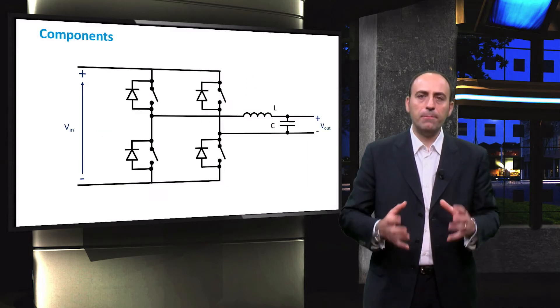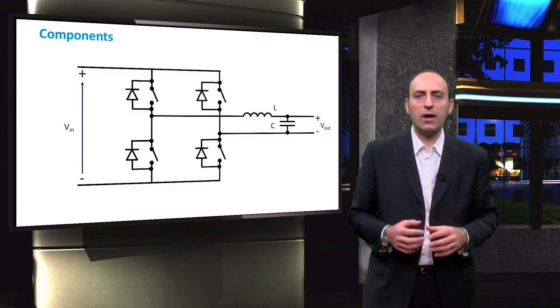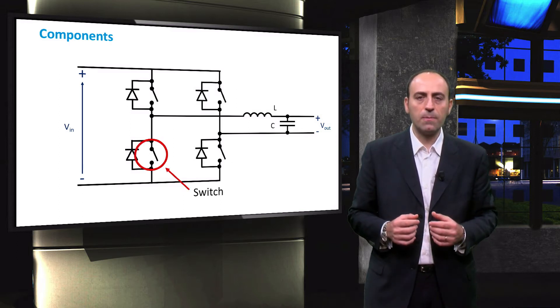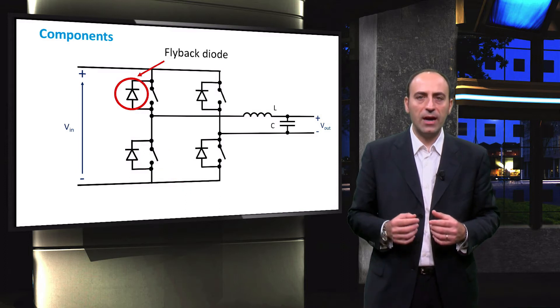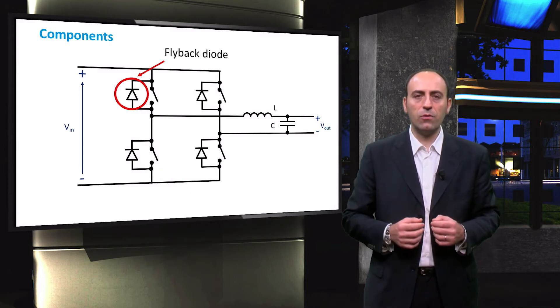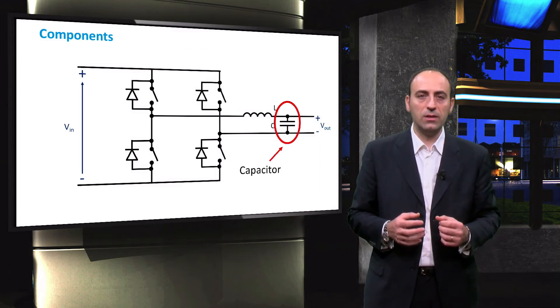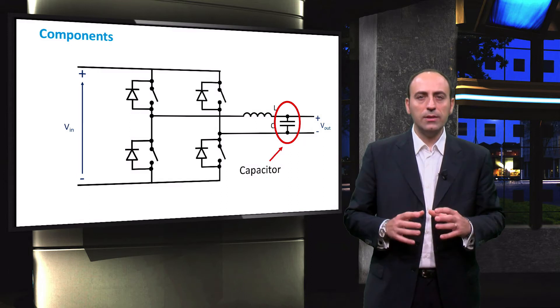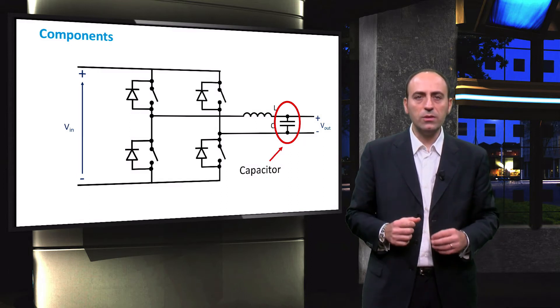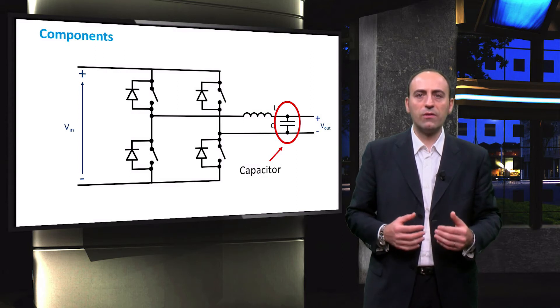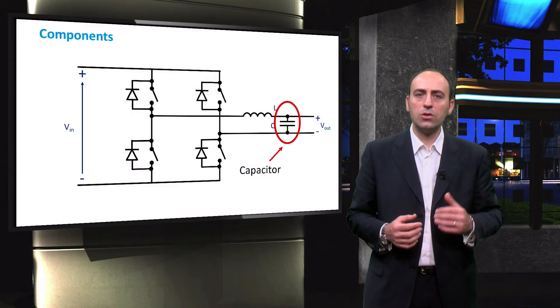Typically, the basic components of this converter are the switches, that can be IGBTs, MOSFETs or thyristors. Then we have flyback diodes in anti-parallel configuration to the switches, inductor and capacitor that act as a filter at the inverter output. The anti-parallel diodes are included in the design in order to avoid damage due to reverse currents on the switching devices.